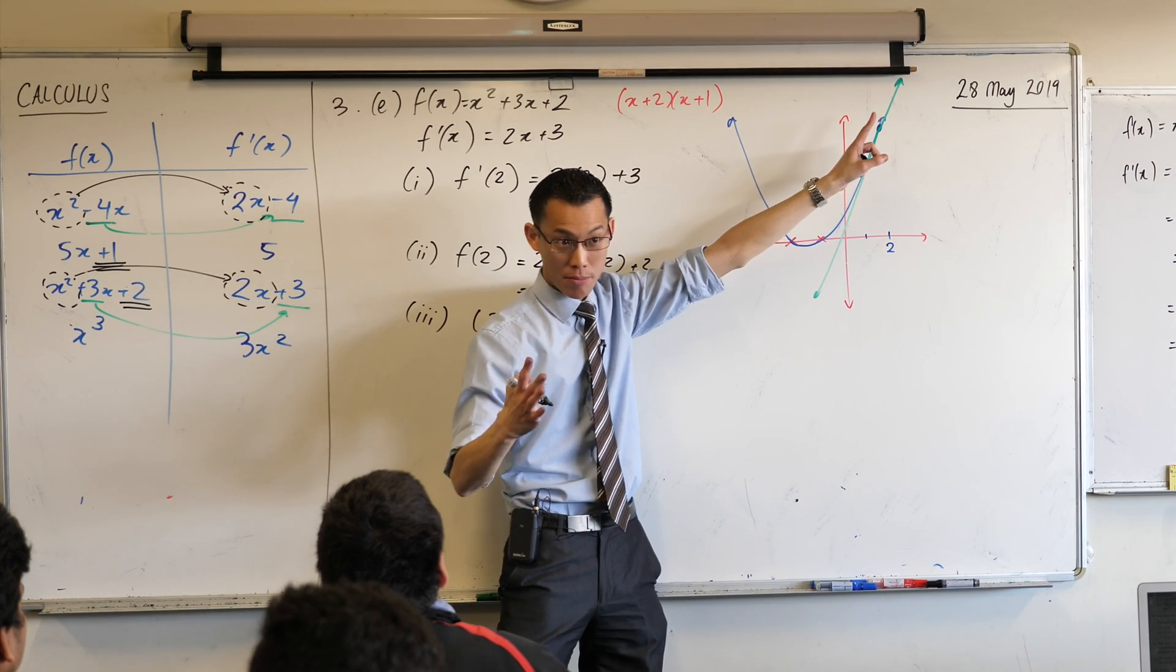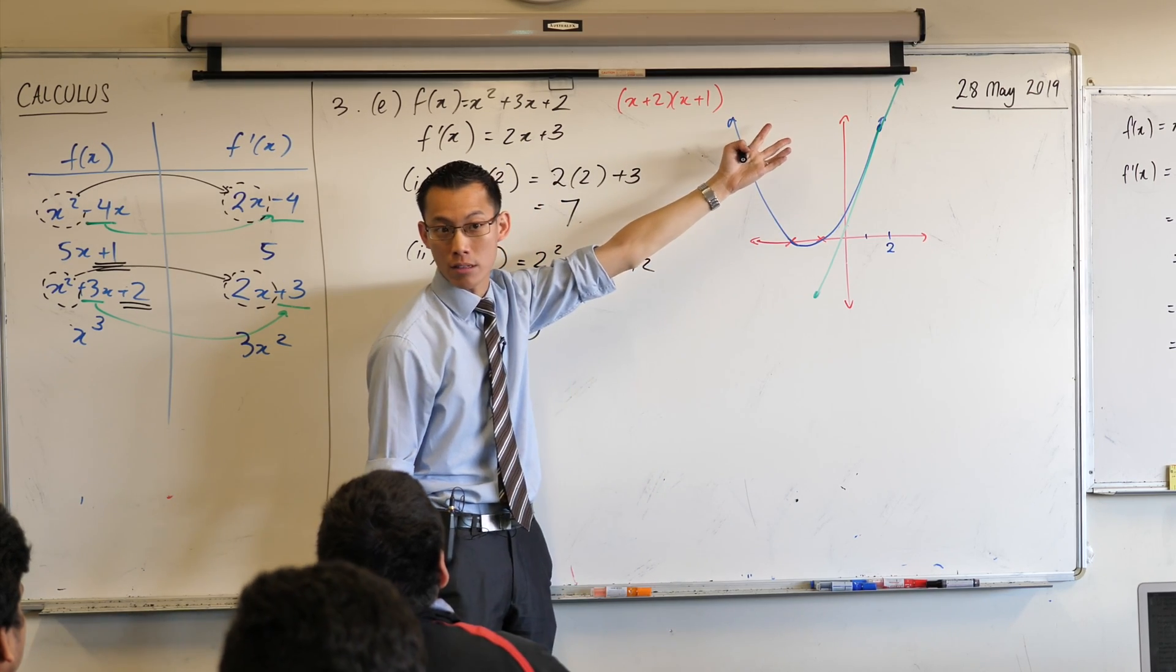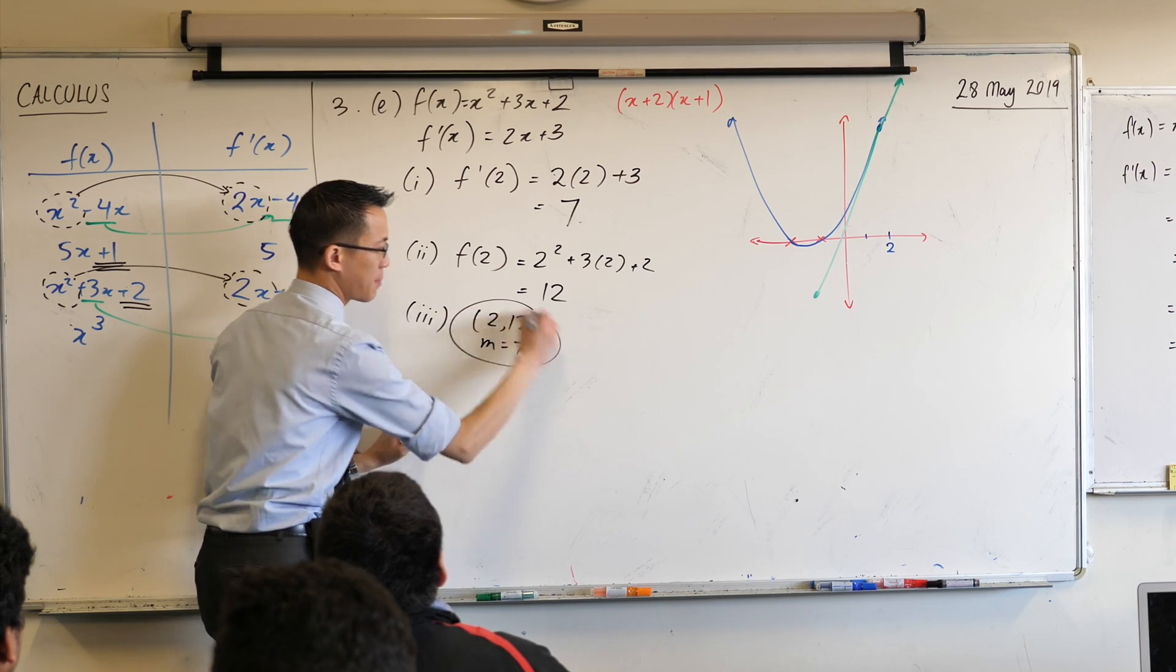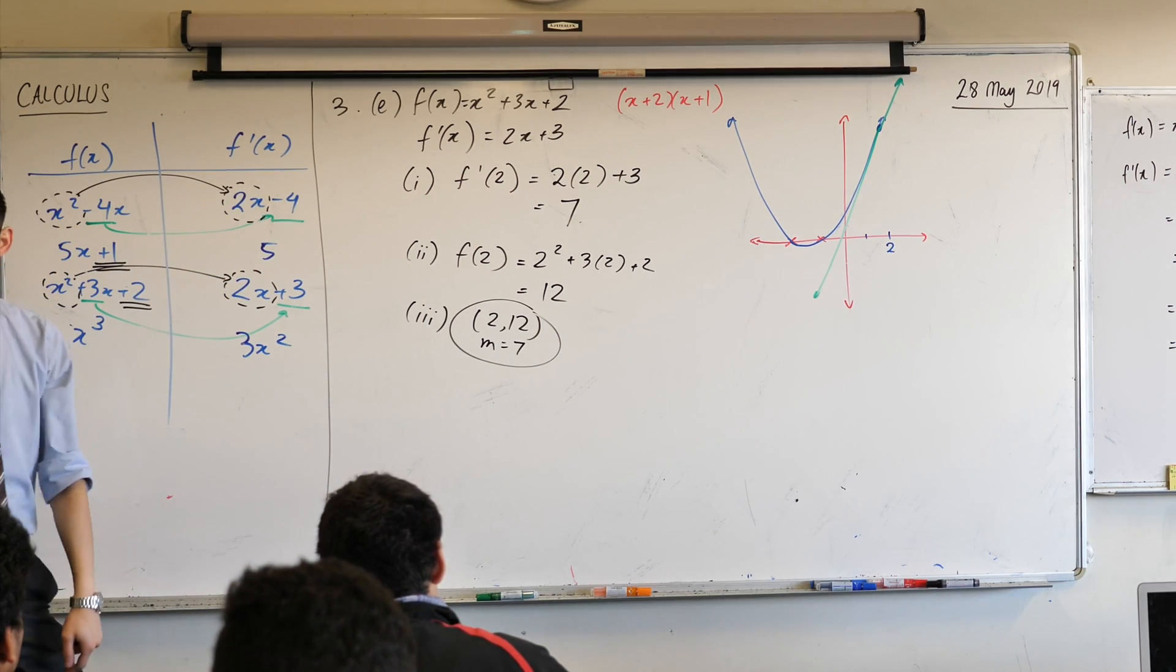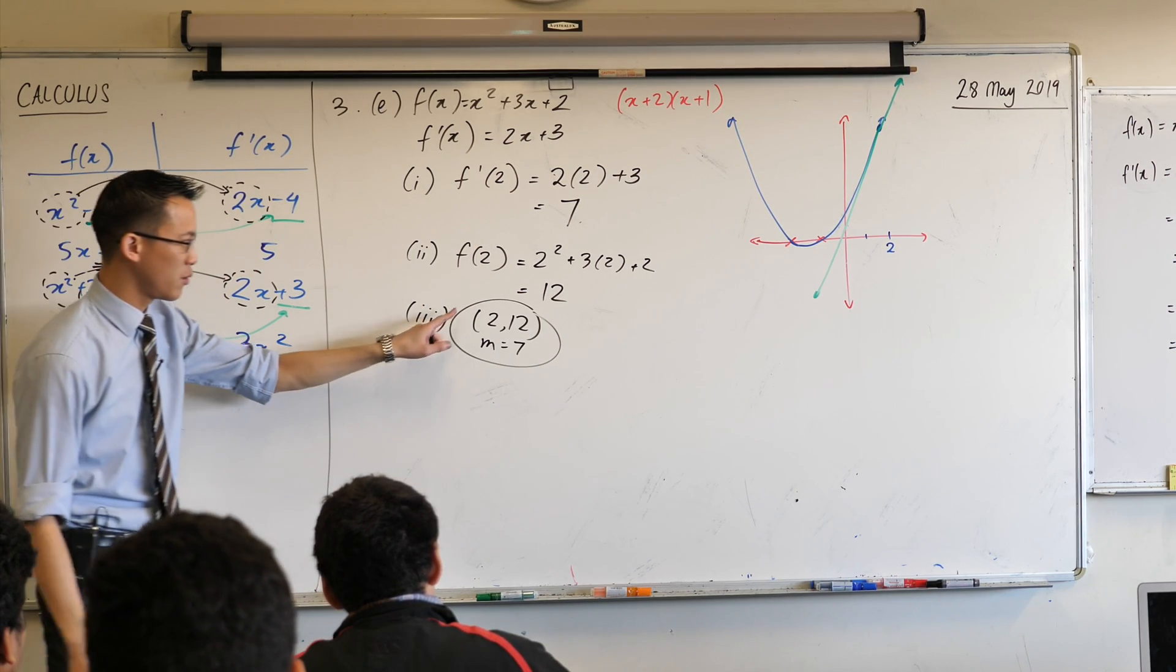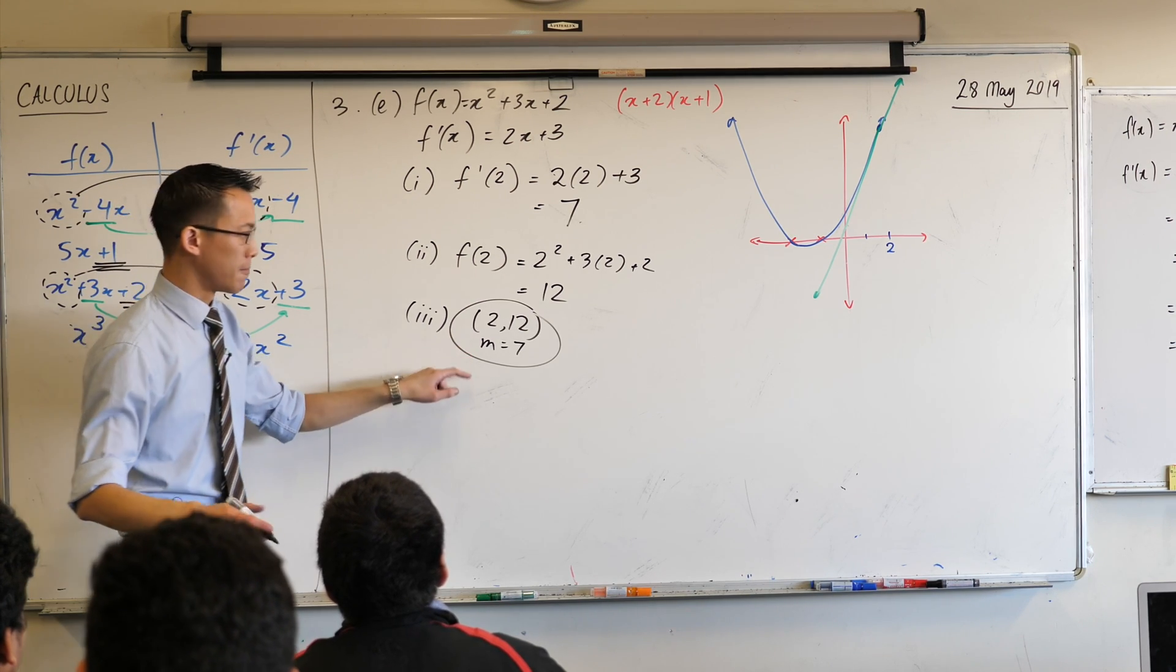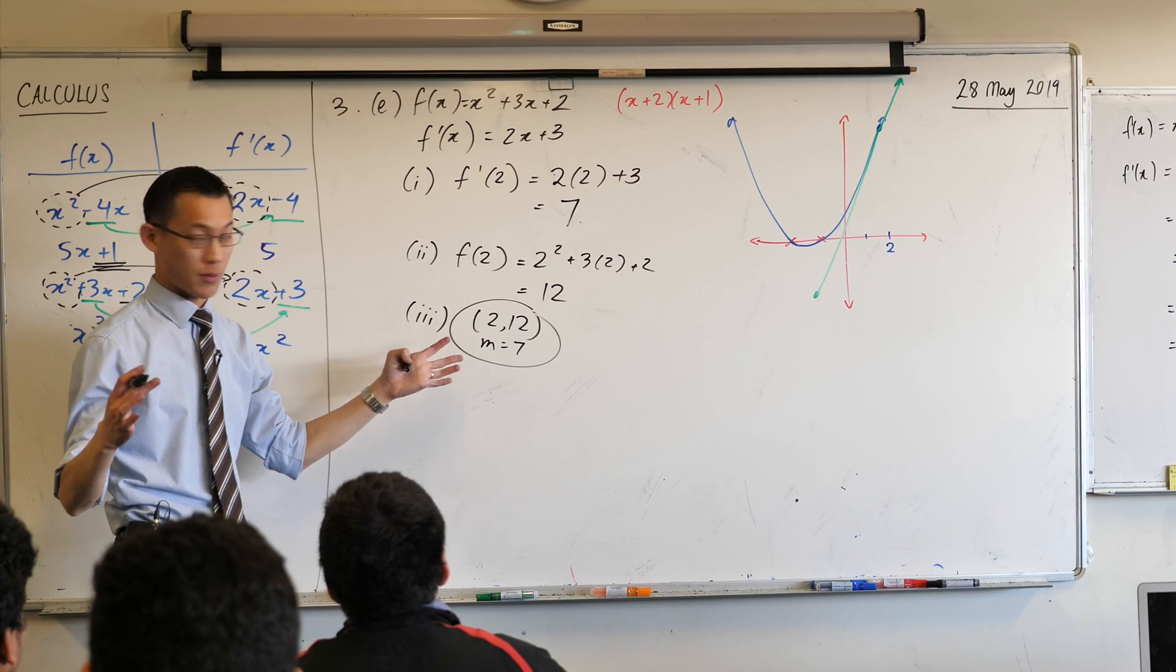You told me before. It was steep and it was positive. Does that match what you expected? Thumbs up. So I've got m equals 7. If these are the pieces of information that I've got, how do I find the equation of a line that goes through there with this gradient? What am I going to use? I've got a form of a straight line for this, right? This green thing is a straight line.